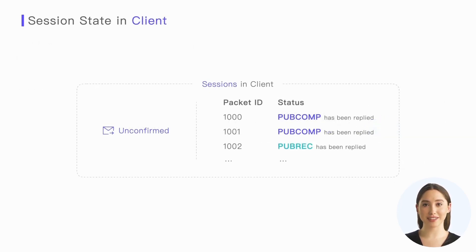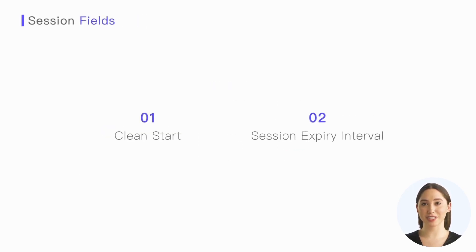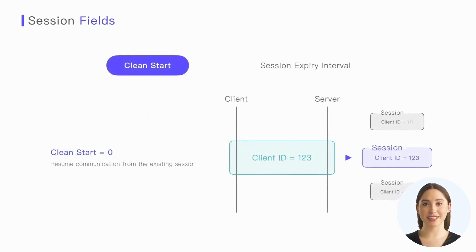For the client, the session states that need to be stored are relatively minimal. They include the QoS1 and QoS2 messages that have been sent to the server but haven't been completely acknowledged, and the QoS2 messages received from the server that haven't been completely acknowledged. MQTT provides two fields for sessions — Clean Start and Session Expiry Interval — which are specified in the connect packet. Clean Start indicates whether an existing session should be reused during connection.